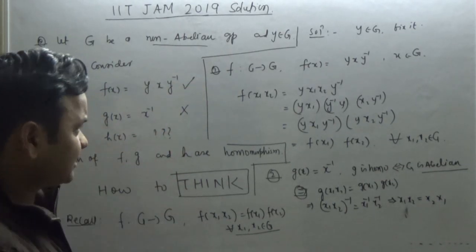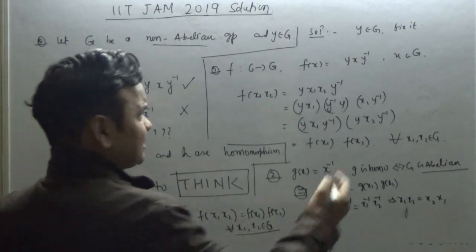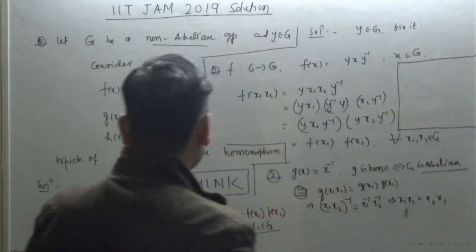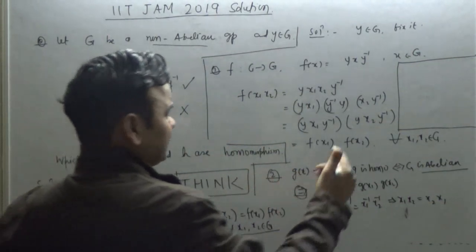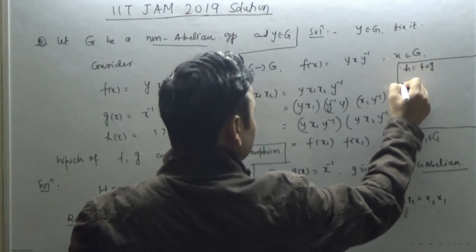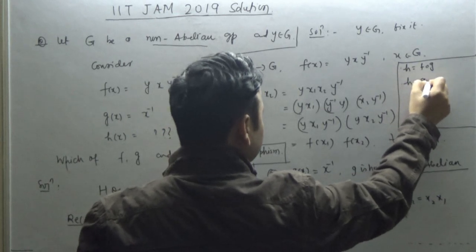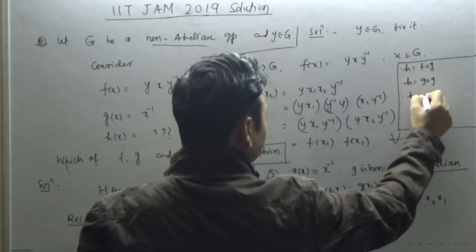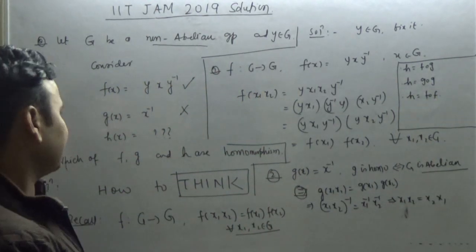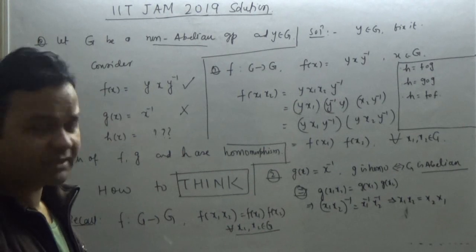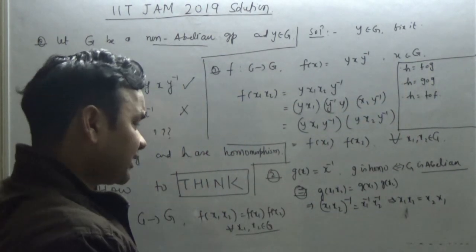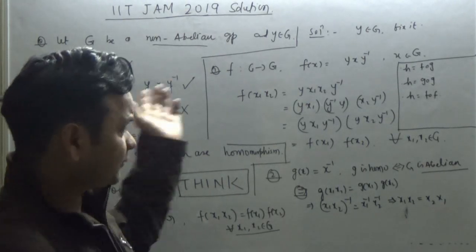And h(x), I am not sure about it. Let me guess what h(x) could have been. What was the possibility of h? So h would be like f compose g, or h would be like g compose g.